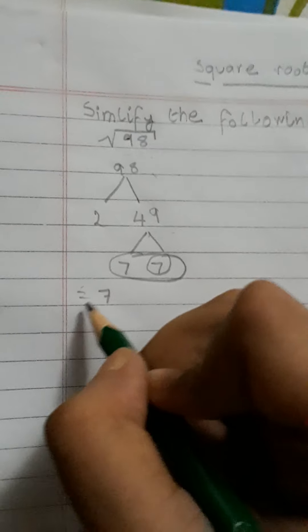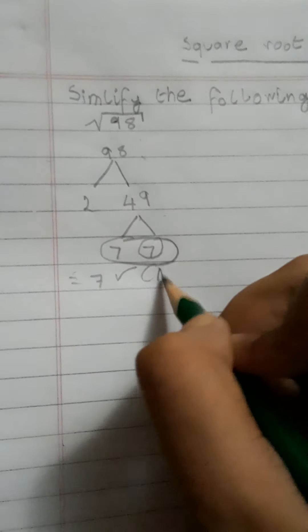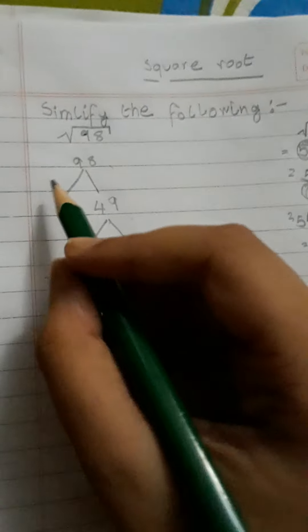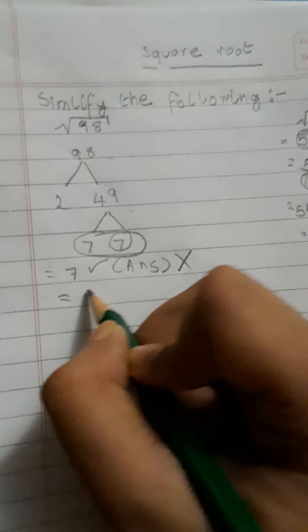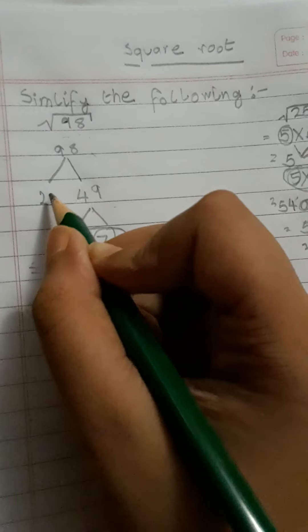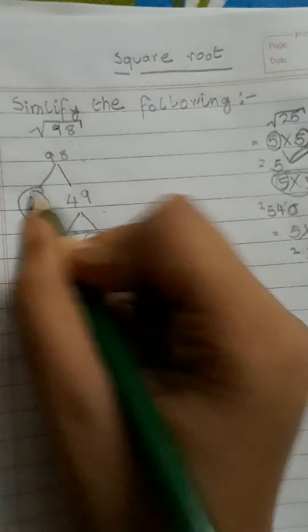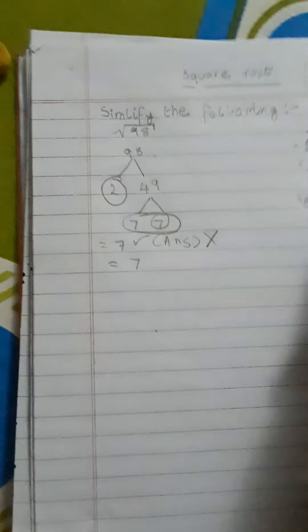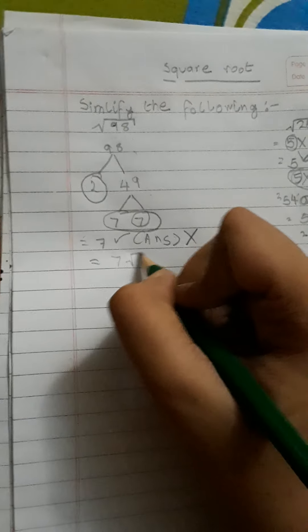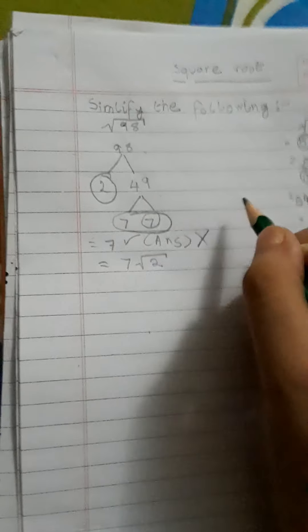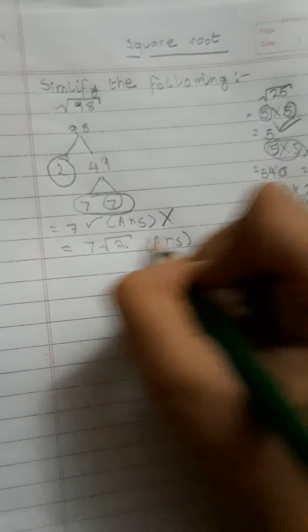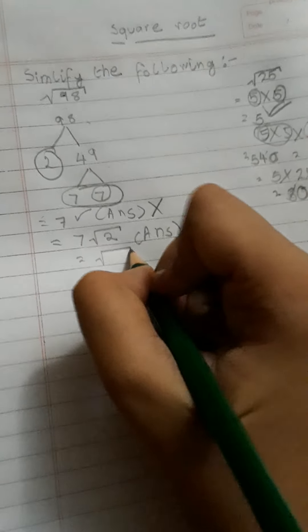So we will take a 7, but this is not the final answer. If you write just 7 as the answer, this is totally wrong. Remember, we have taken out 7, but we have a 2 left, this factor of 2, and we cannot divide it further as it is a prime number. So it will be root 2. So 7 root 2 is the answer for the square root of 98.